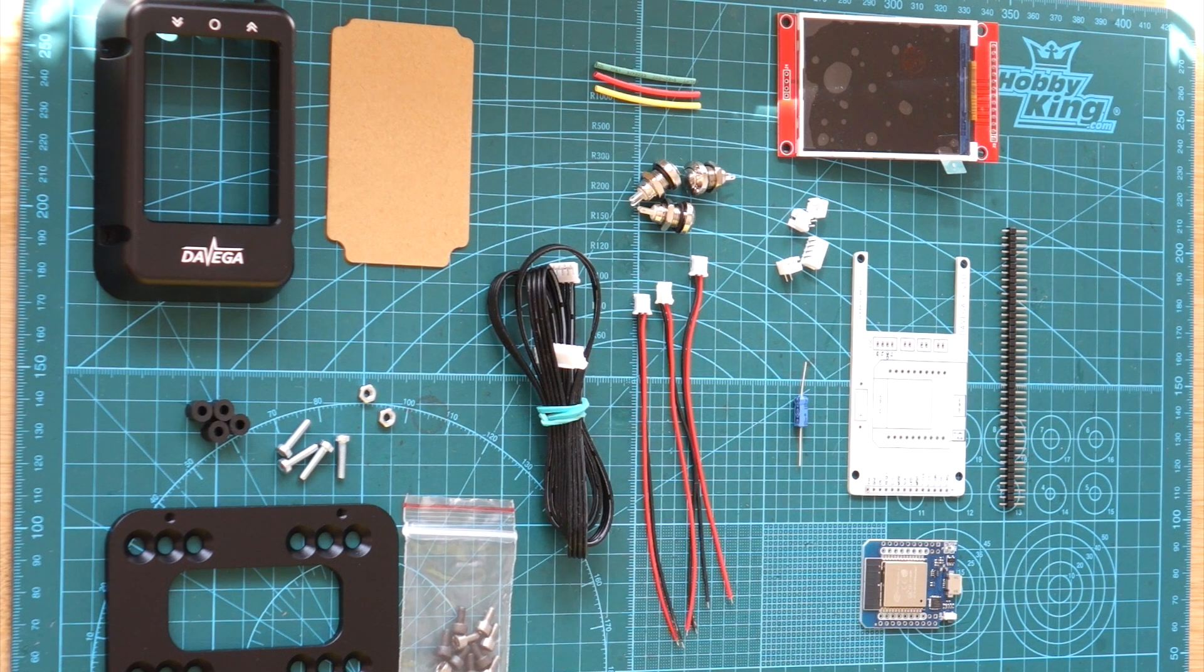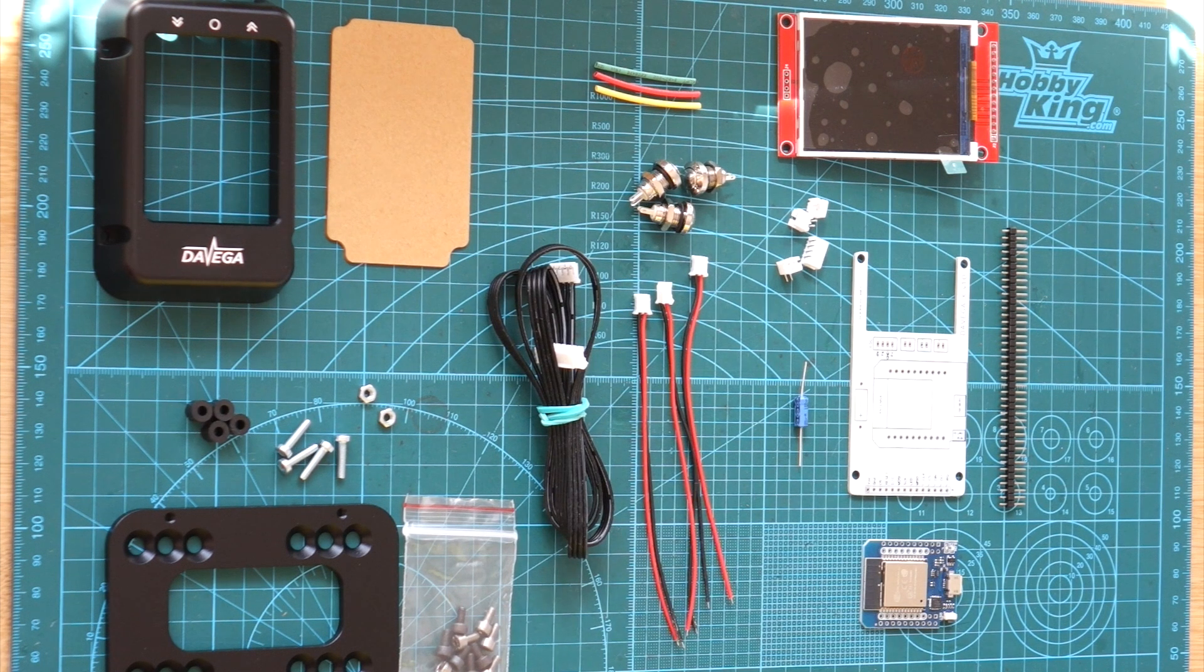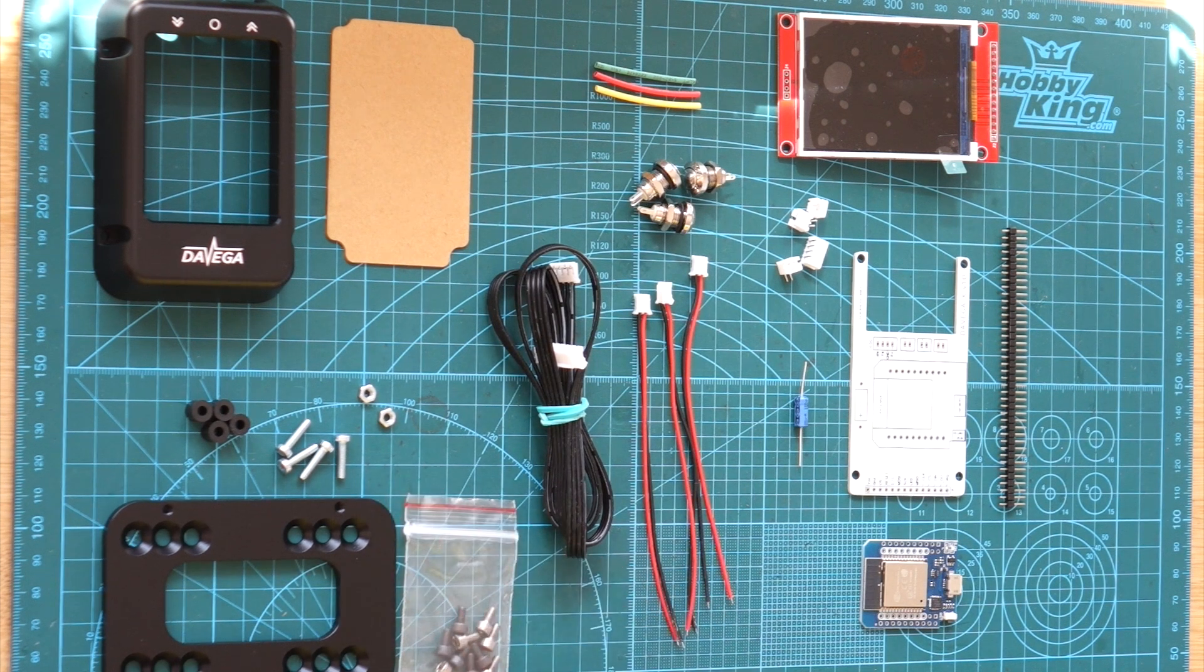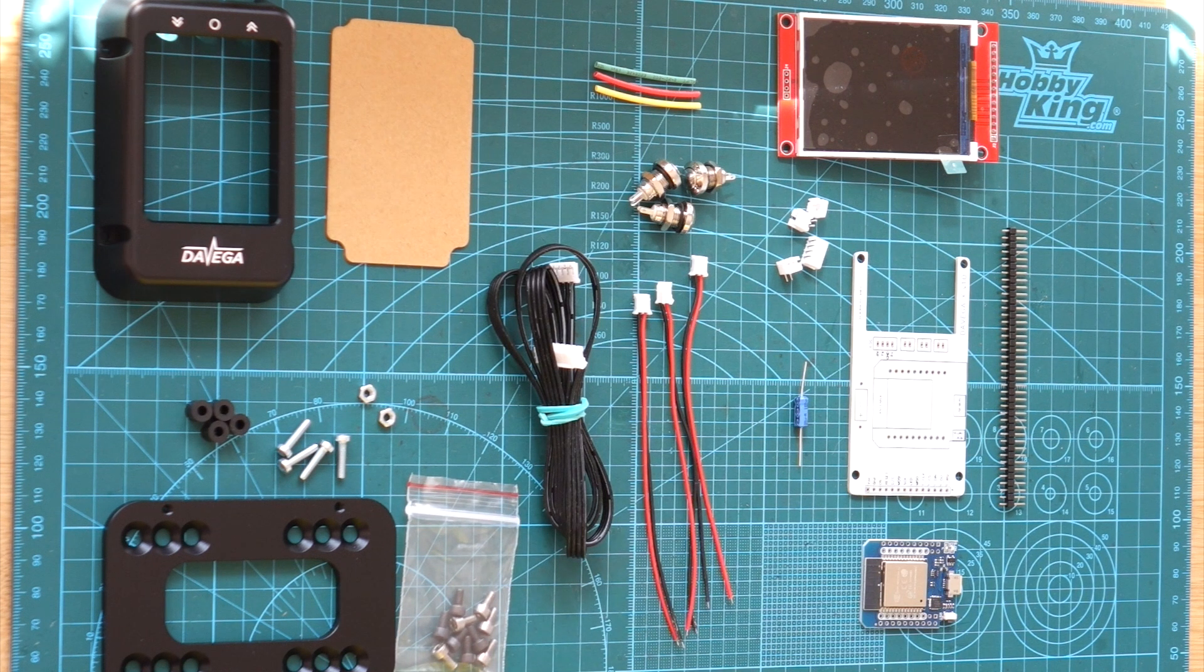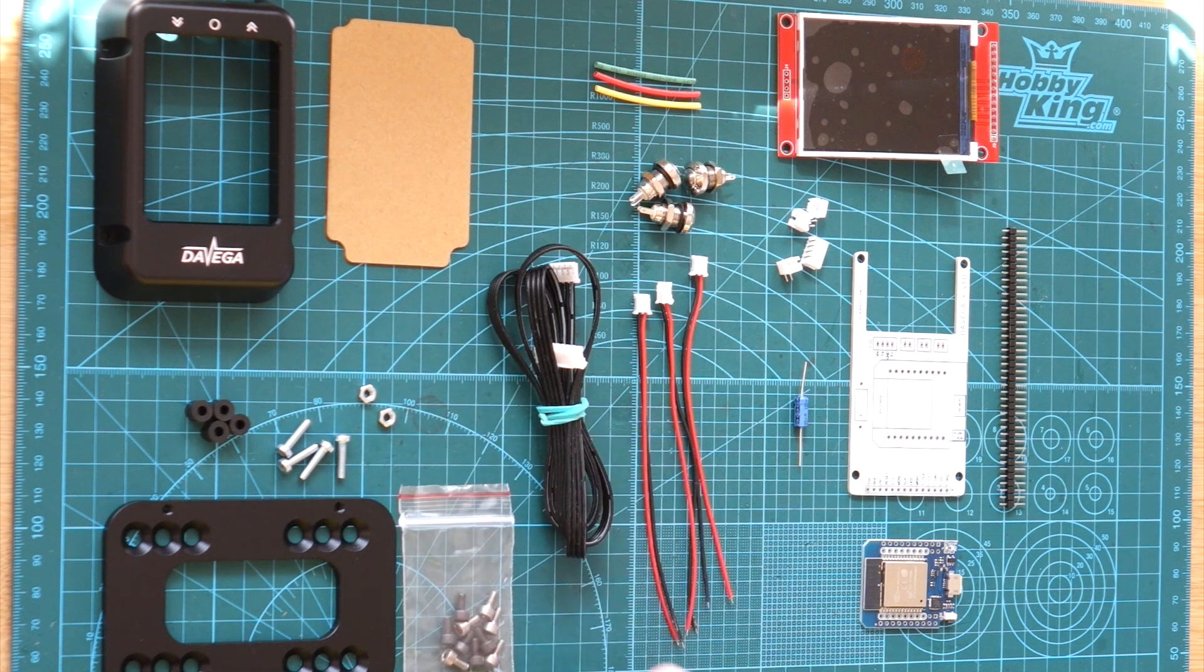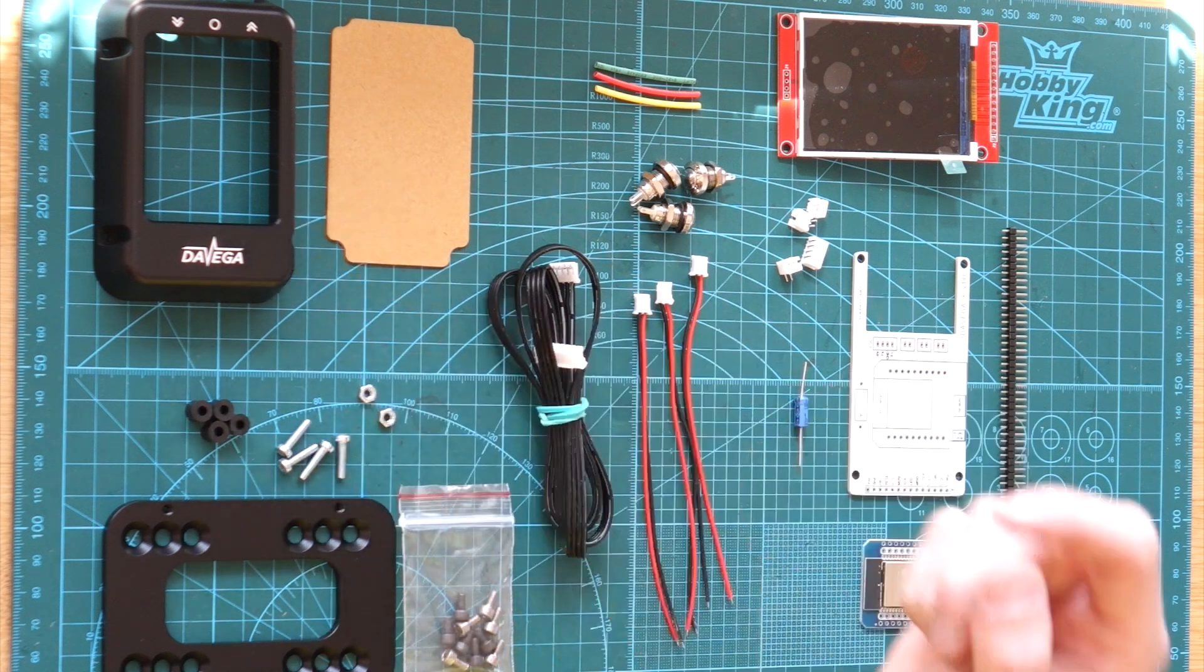So first let's have a look what's in the kit. You have the base plate and some entry bolts for mounting the housing to the base plate. Then the housing,